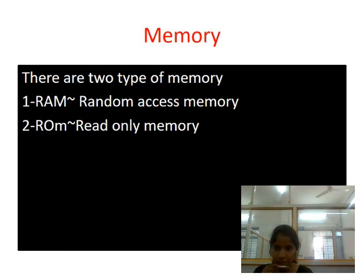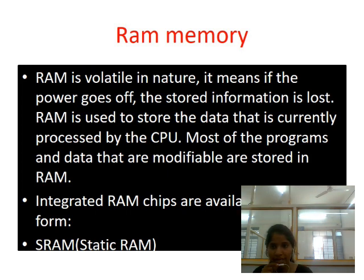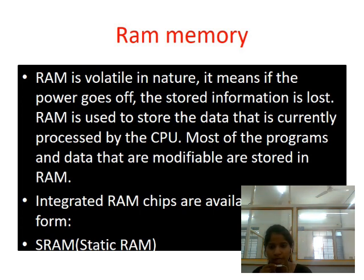There are two types of memory: the first is random access memory (RAM) and the second is read-only memory (ROM). RAM is a volatile memory, meaning that when the power is off, the data is not stored permanently — it is lost. RAM is used to store data that is currently being processed by the CPU.